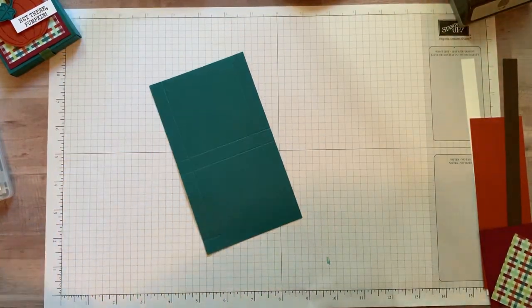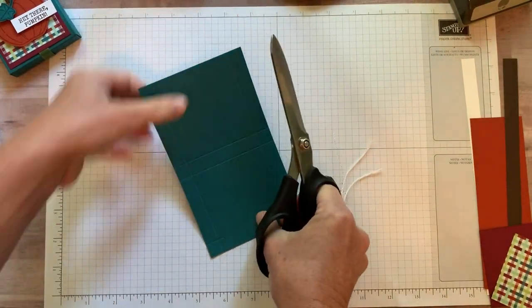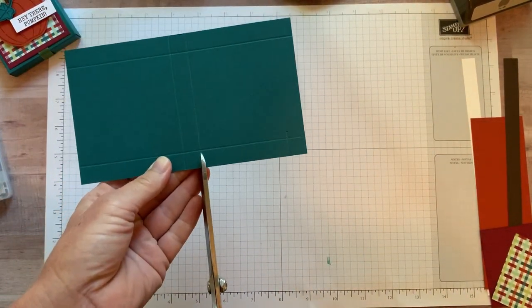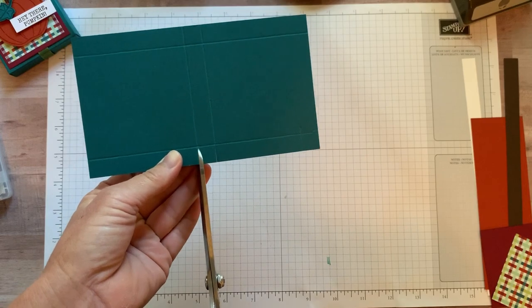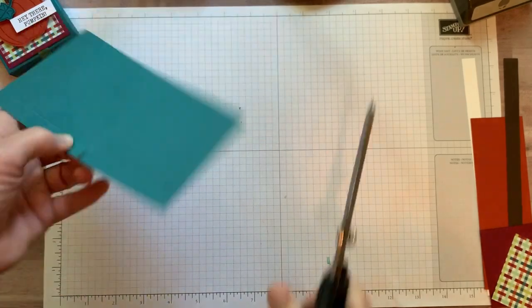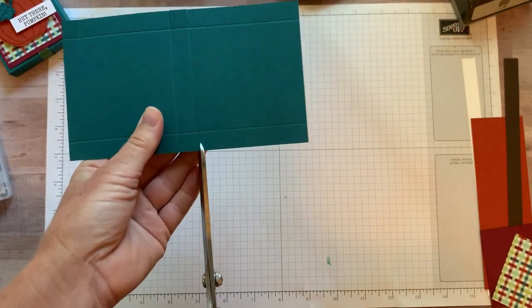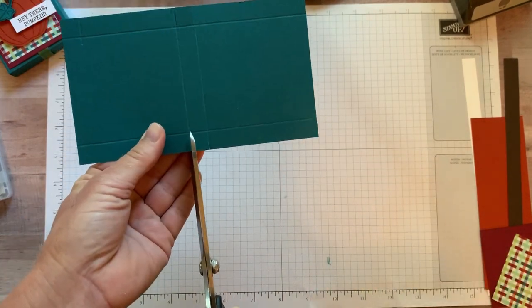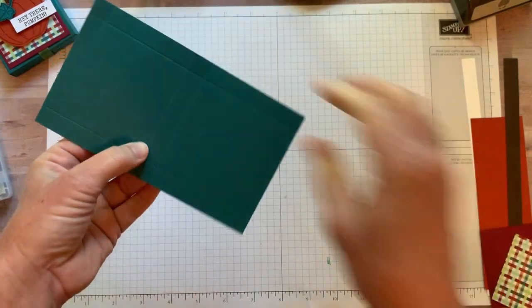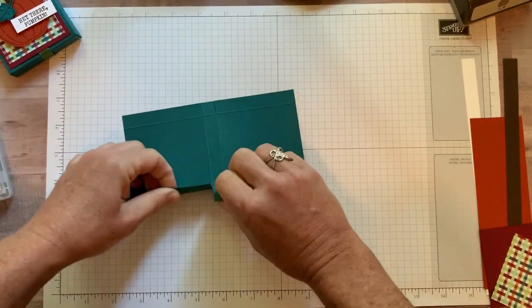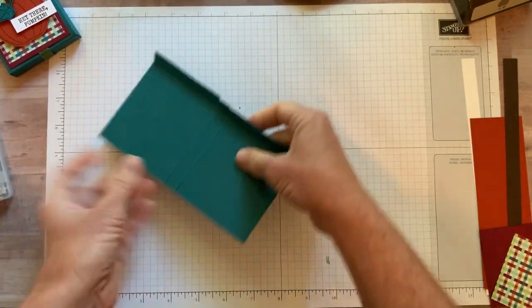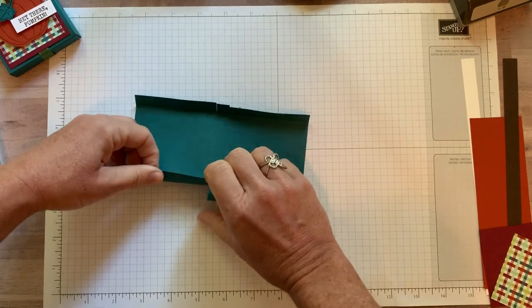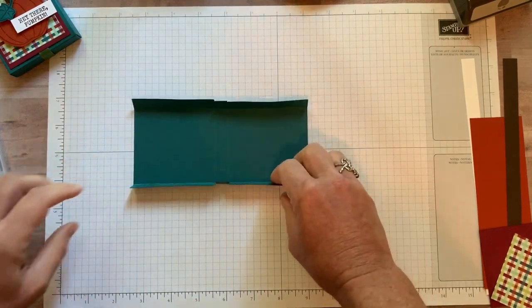Then we are going to grab our scissors and we're just going to cut up along the score mark at the three and three and a half inches on both sides up to that long score mark right there. So we're just going to do those right there. Then just want to kind of fold everything in and you can see how easy this box is going to come together.